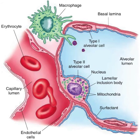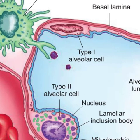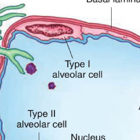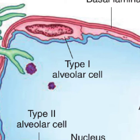Type 1 alveolar cells, also called type 1 pneumocytes, cover most of the alveolar epithelial surface. They are flat and thin, thus allowing gas to diffuse across from the alveolus to the blood and from the blood to the alveolus. These cells cover 95% of the alveolar surface area. They are non-proliferative and cannot divide.